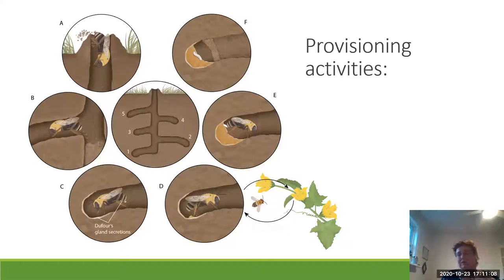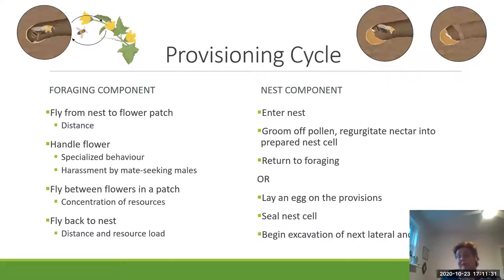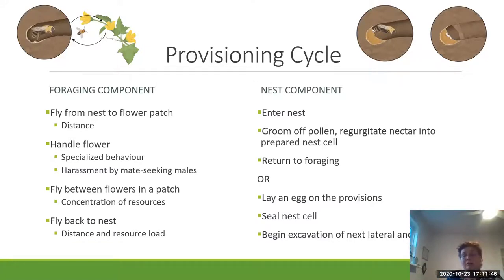After she provisions a cell, the bee lays an egg and then seals the cell off. The provisioning cycle involves two parts. It involves the foraging component, in which the bee is flying out to the patch and returning. The duration of the first part — flying from the nest to the flower patch — depends on how far away she is, but these bees often nest very close to patches. Then there's the issue of flower handling time. These bees are specialized and have a specialized behavior on these flowers, so their handling time is very low.